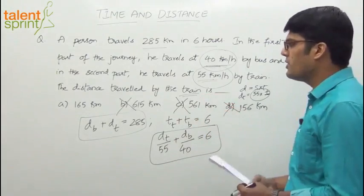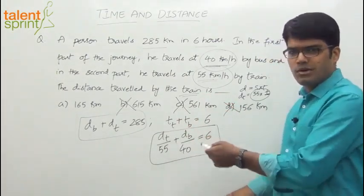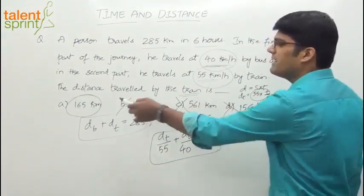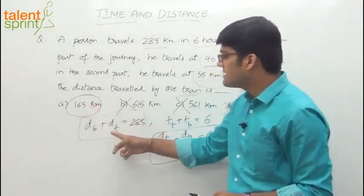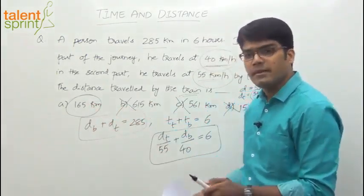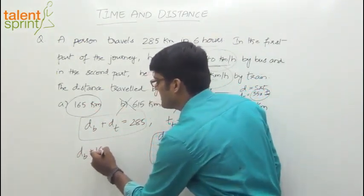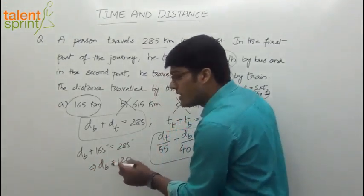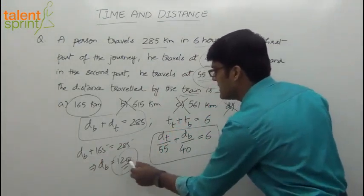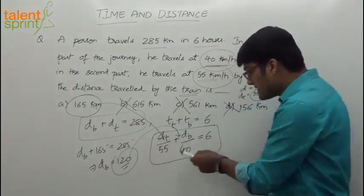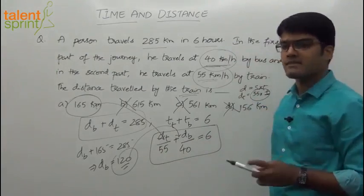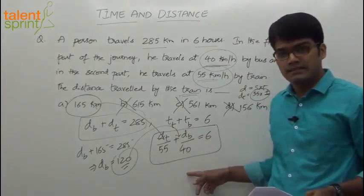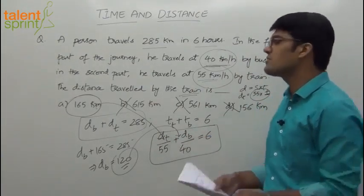Anyway, let us substitute and verify. Either solve these or go by options. Let's substitute the option. We'll assume that option A is the correct answer. Distance travelled by train is 165. If distance travelled by train is 165, what will be the distance travelled by bus? Distance travelled by bus plus 165 has to be 285. From this, we can say the distance travelled by bus is 120. Now, you have to substitute this in the time equation. If it satisfies this equation, then that's the correct answer. Check. 165 by 55 is 3. 120 by 40 is 3. 3 plus 3 is 6. Satisfied or not? Which means the option is the correct answer.